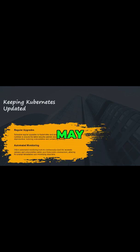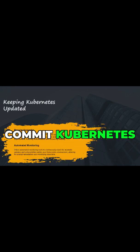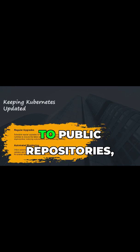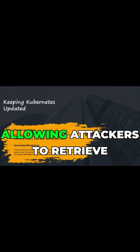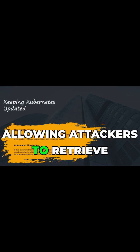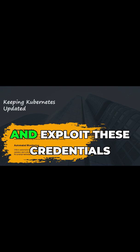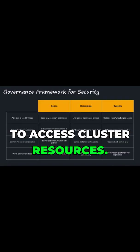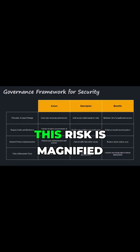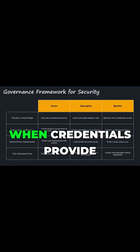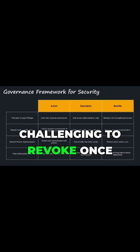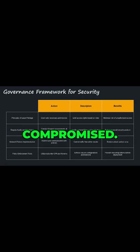Developers may accidentally commit Kubernetes API credentials to public repositories, allowing attackers to retrieve and exploit these credentials to access cluster resources. This risk is magnified when credentials provide elevated privileges or when they are challenging to revoke once compromised.